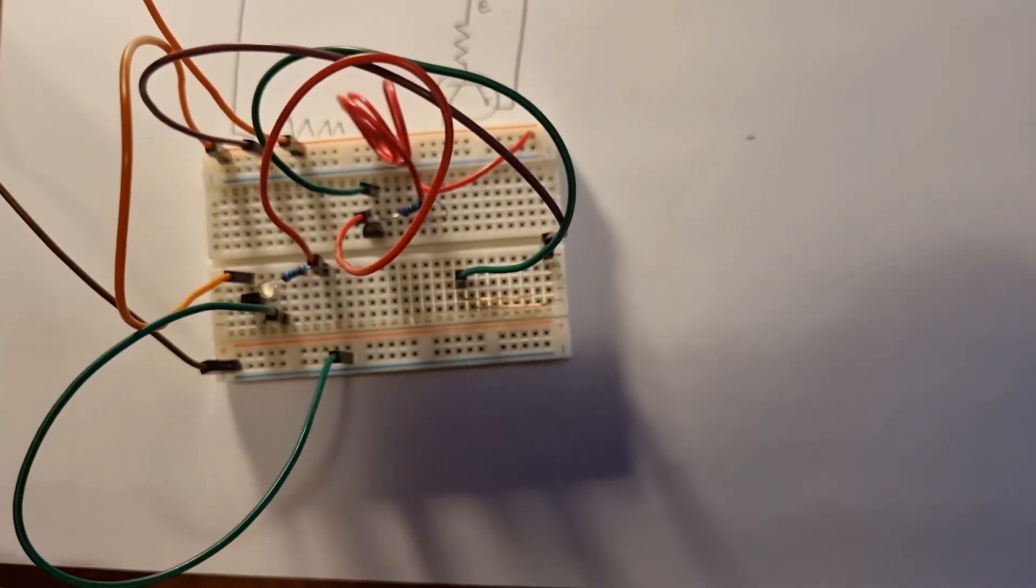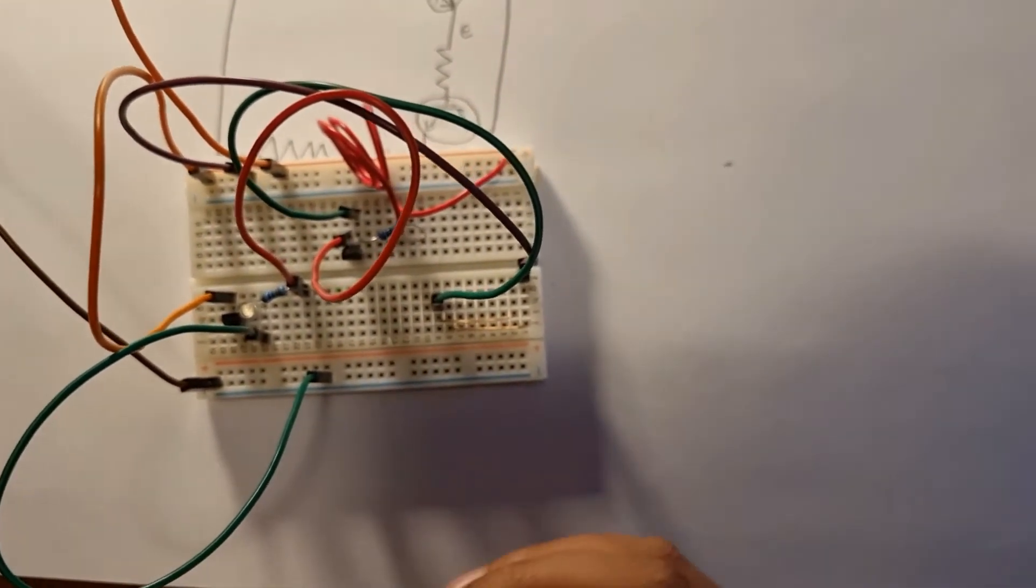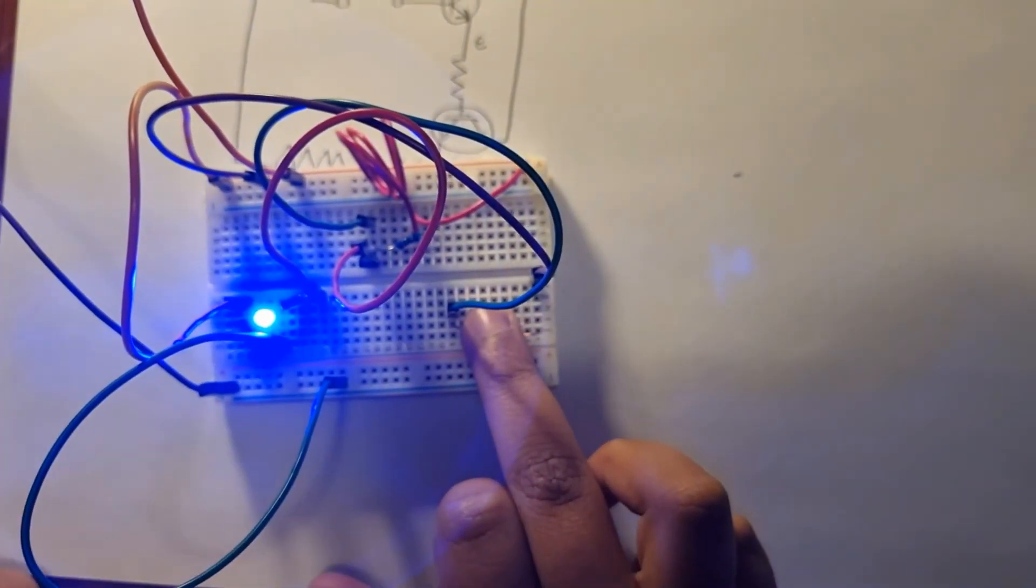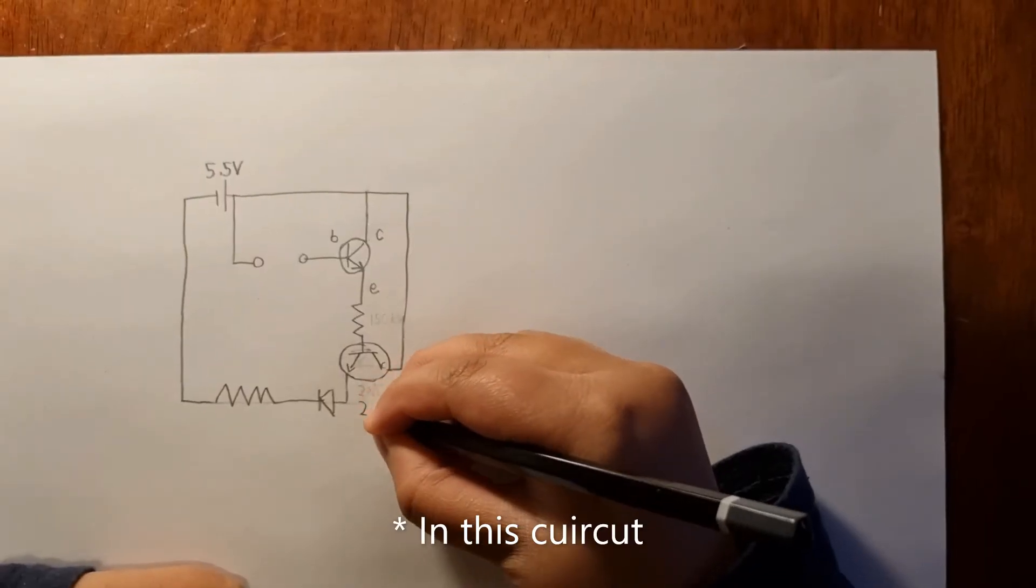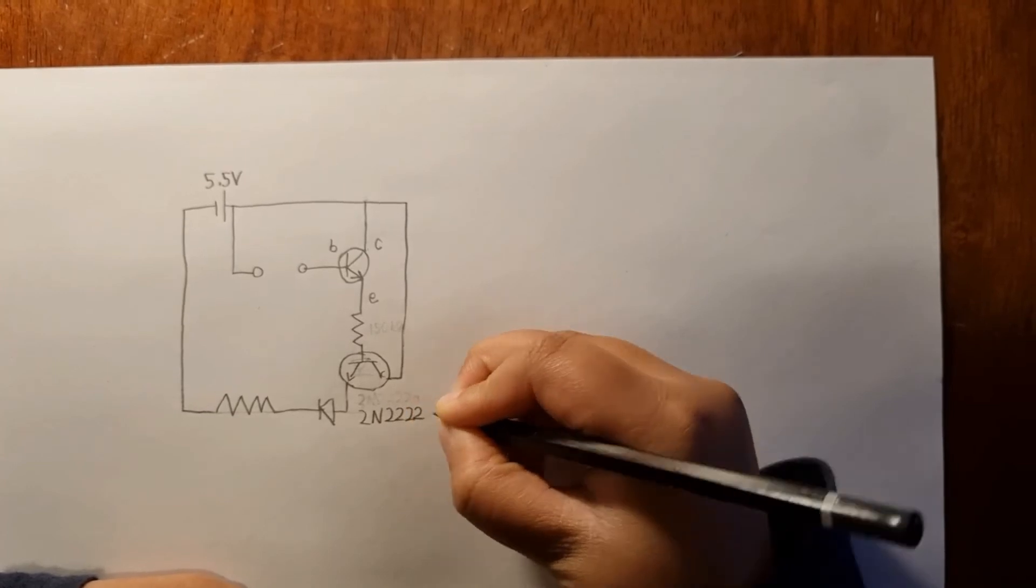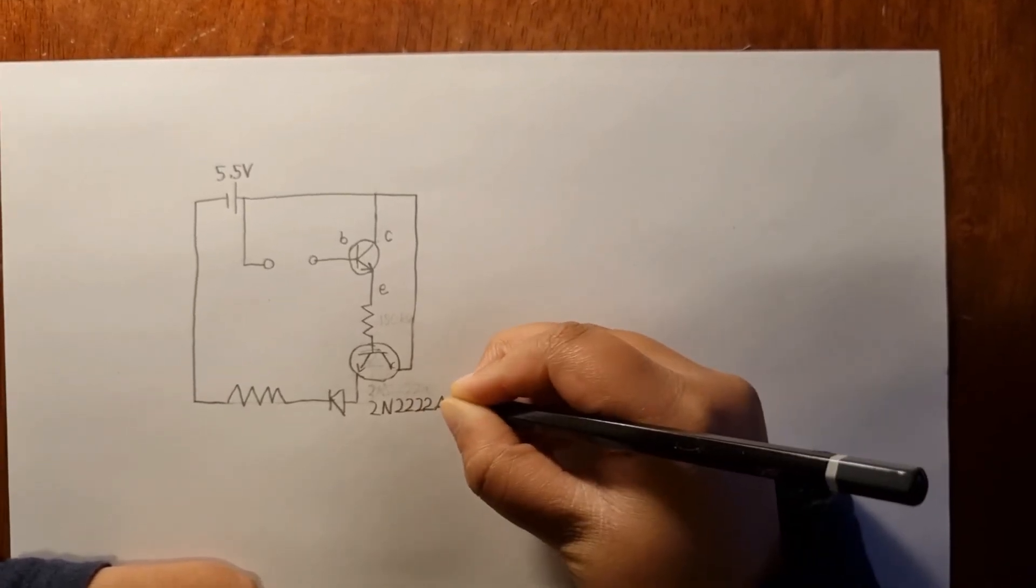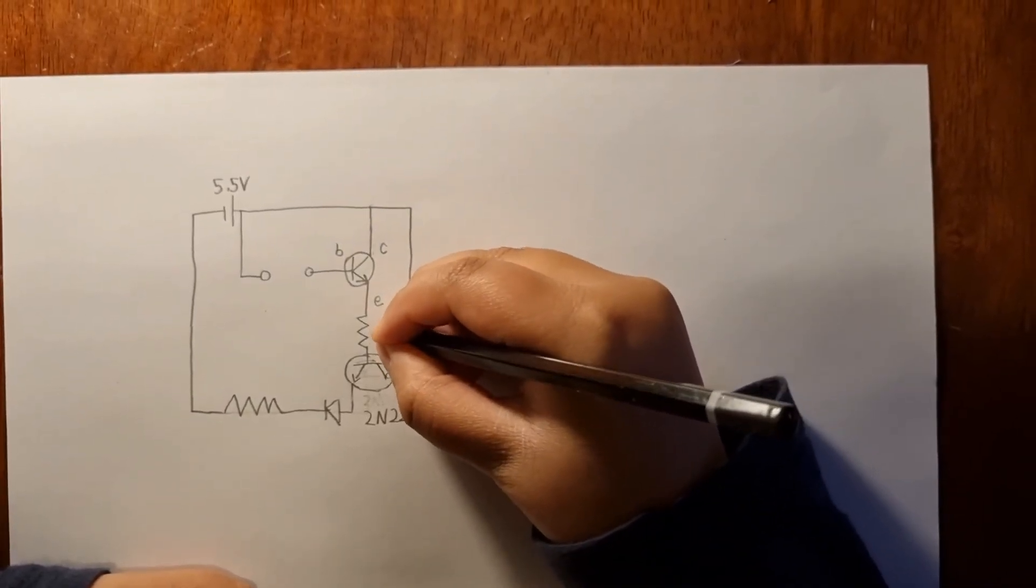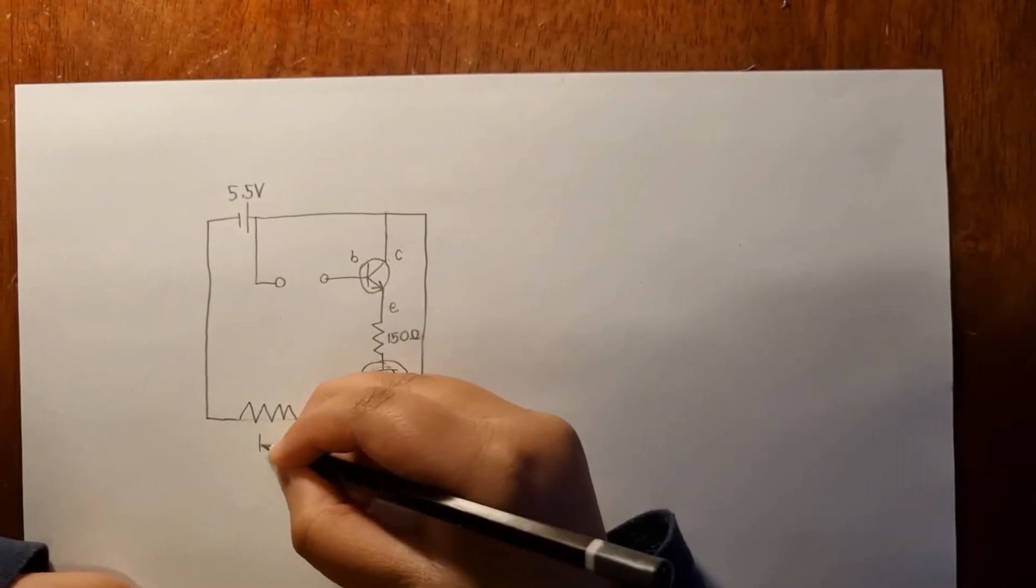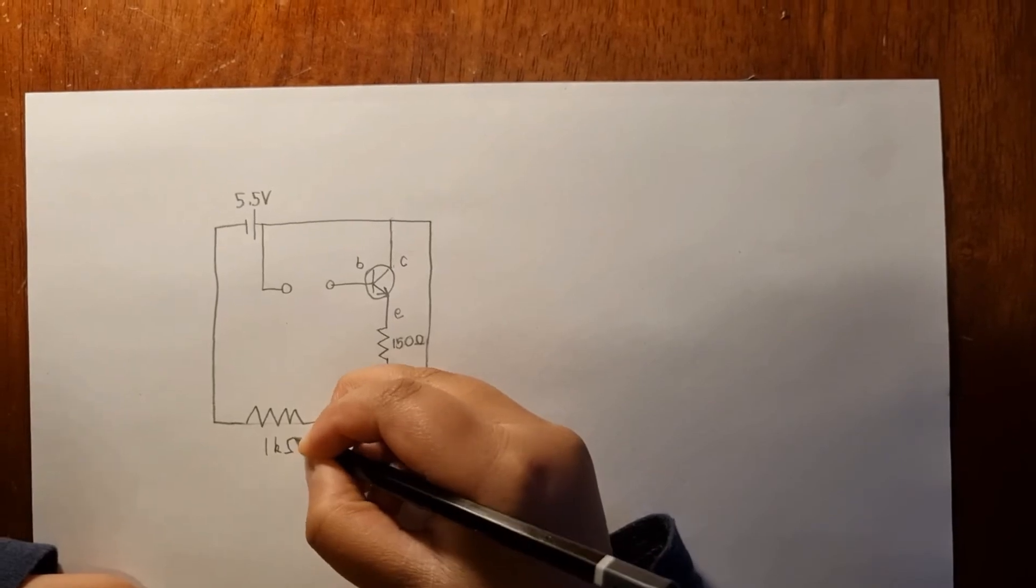This time, the LED, it doesn't matter whether you have salt in your fingers or water in your fingers, it will stay just as bright. For this circuit, we used a 2N2222A transistor. We used a 150 ohm resistor, and here we used a 1 kilo ohm resistor.